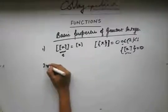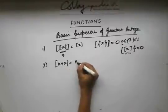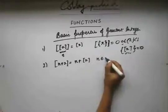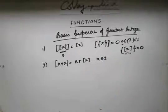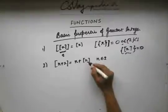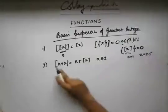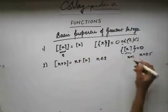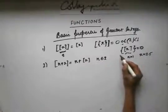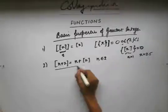The next important property is box(x + n) = box(x) + n, where n belongs to the integers. To verify with an example: let n = 1 and x = 2.5. Then n + x = 3.5, so box(3.5) = 3. And here, box(x) + n = 2 + 1 = 3. This verifies the property is correct. Now I would like you to prove this.